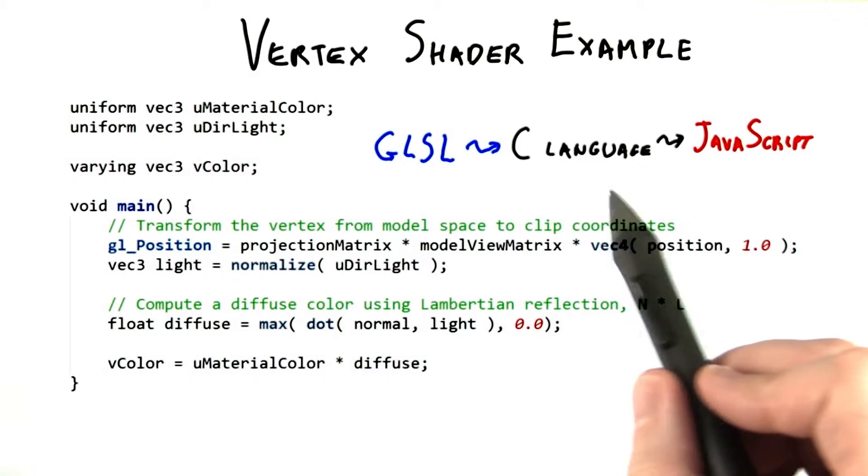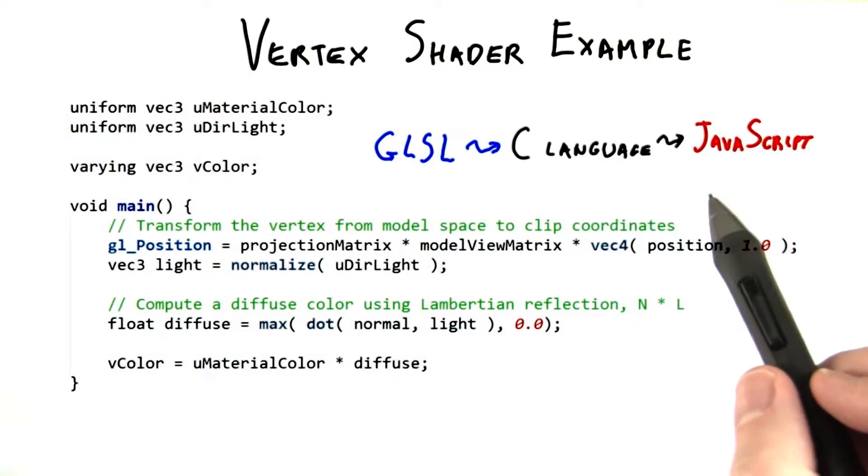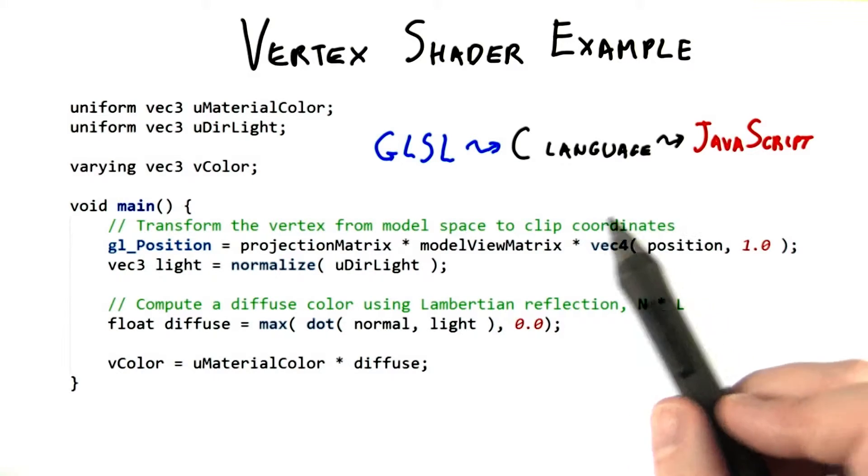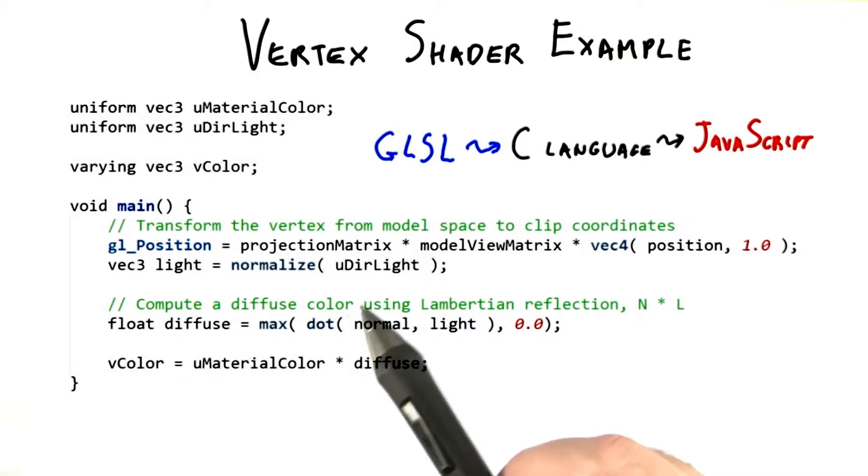The GLSL language is sort of like the C language, which is kind of like JavaScript anyway, but simpler. Because vectors are so important in graphics, the language also has vector support built in.